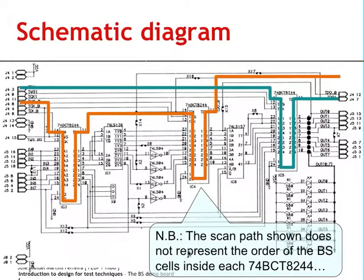In this case, you can also see that the scan path does not represent the order of the boundary scan cells. This is simply a representation meant to highlight the two scan chains.